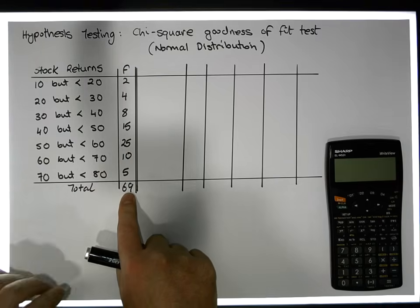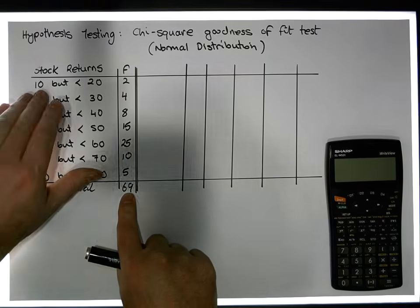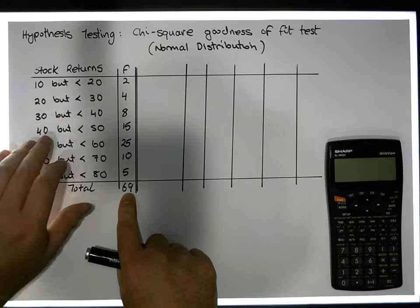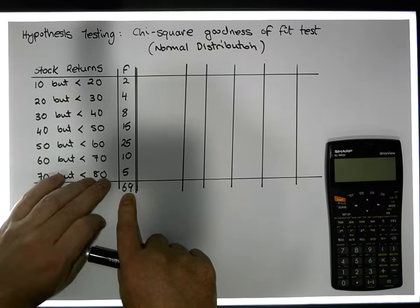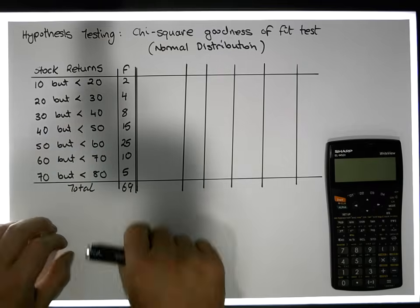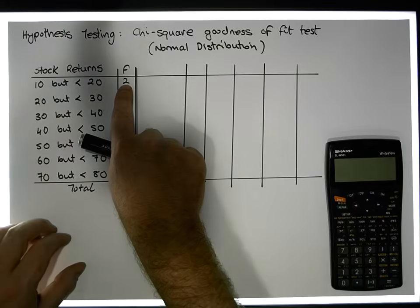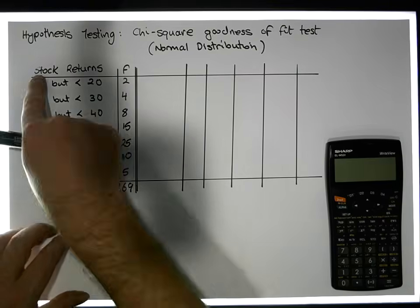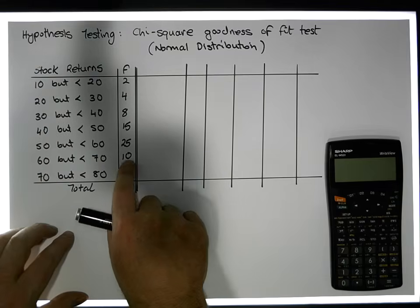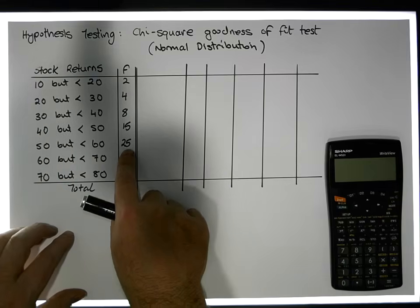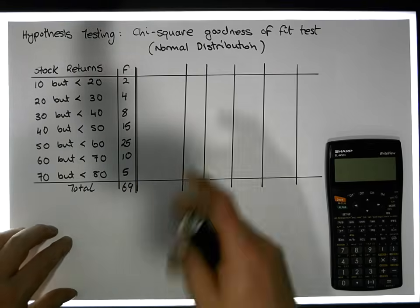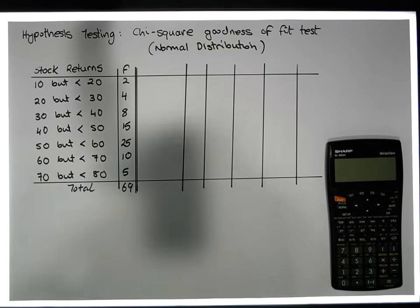The 69 observed returns fell into intervals: 10 to 20 percent, 20 to 30, 30 to 40, 40 to 50, 50 to 60, 60 to 70, and 70 to 80. These intervals exclude the upper bounds but are inclusive of the lower bounds. For example, two of the observed returns were between 10 and 20 percent, and 25 of the observed 69 returns were between 50 and 60 percent.